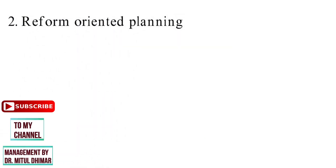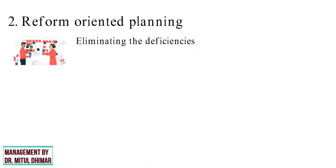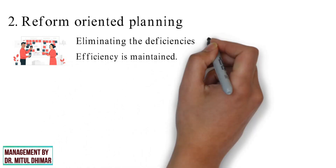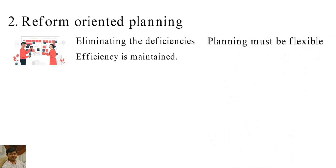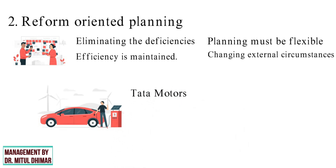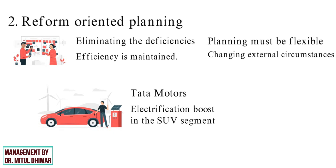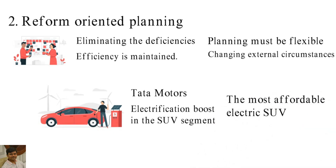Reform-oriented planning aims to reform business activities by eliminating inefficiencies observed in its constant review. For the survival of the business, it is necessary that its efficiency is maintained. Planning must be flexible enough to change with the changing circumstances, and policies and programs must change according to changing external circumstances. For example, Tata Motors kickstarted the electrification boost in the SUV segment with the Nexon EV, the most affordable electric SUV in the country, with a powerful new design.